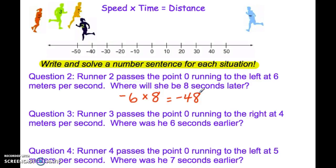The second one, runner three, he's passing the point zero, going to the right, four meters per second. You want to know where he was before, six seconds ago, so he would have been back here somewhere. Again, he's going to the right, so four meters per second. He's four positive. Where was he six seconds earlier? So in the past, so four times negative six. And notice he was at negative 24.